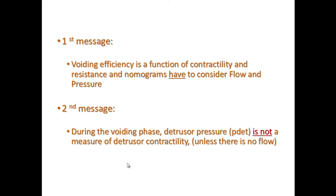Detrusor pressure is a function not only of detrusor contractility, but also of urethral resistance — unless the detrusor is contracting against a closed urethra with no flow. Only in that case, when there is no flow, is the detrusor pressure a true function of detrusor contractility.